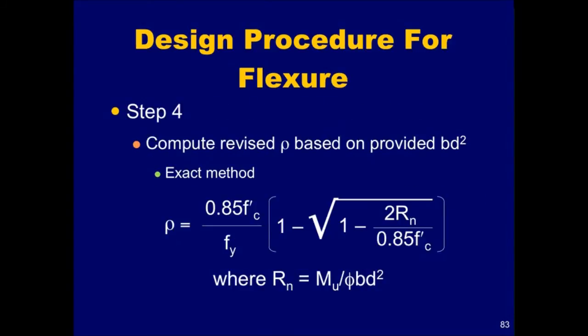Once the values of b and d have been established, a revised reinforcement ratio, rho, needs to be computed. This is done in step 4 of the design procedure. A number of different methods are available to do this. Using this equation will give an exact value of rho, where R sub n is determined using b and d from step 3.